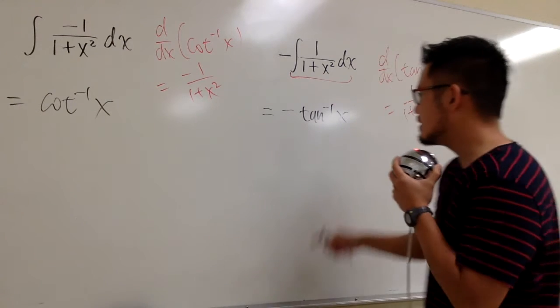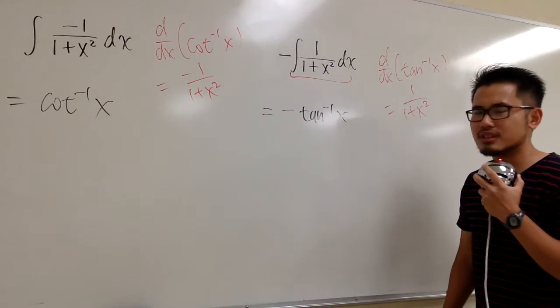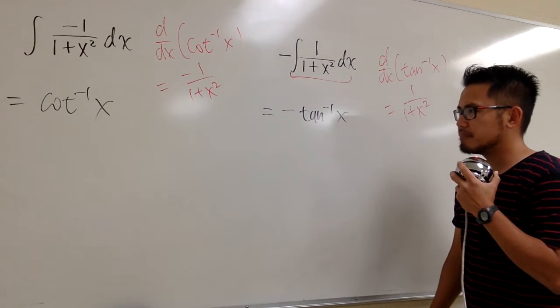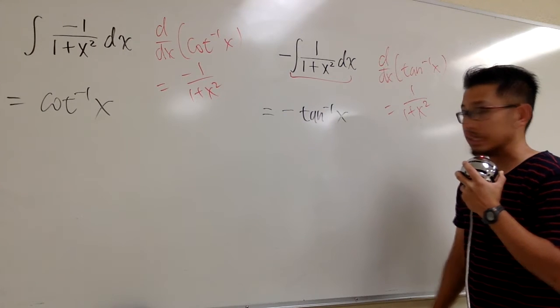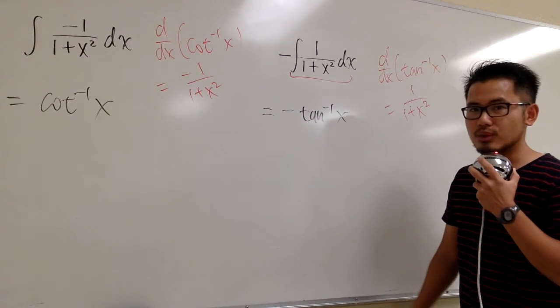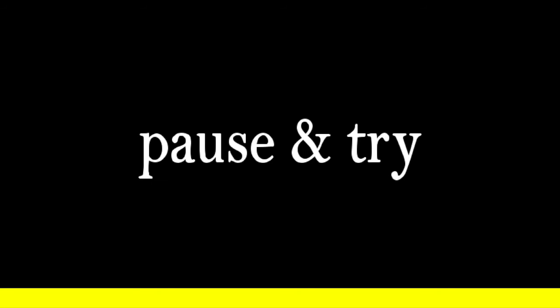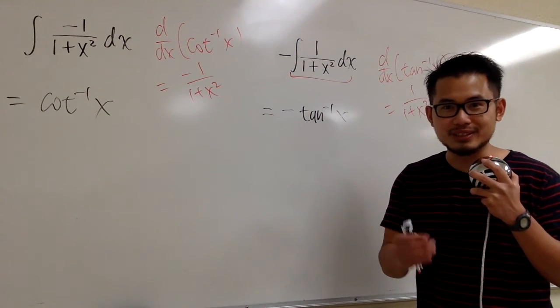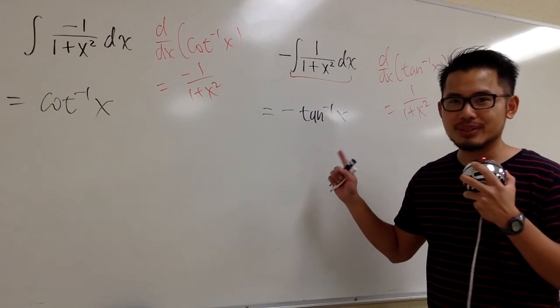That's inverse cotangent, and this is negative inverse tangent. Does that mean they are equal? I don't know. It's not... I don't know. I want you guys to tell me what you think. I will tell you guys the answer in the next video. That's it! See you next time.